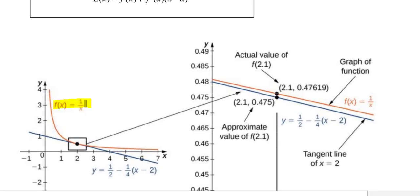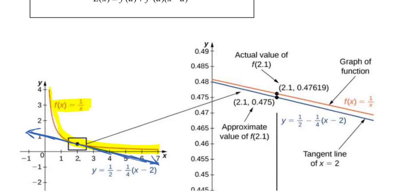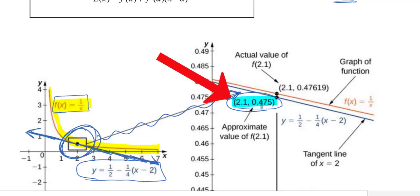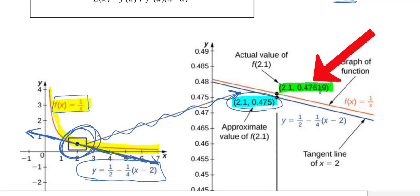If we look at the function f(x) = 1/x — that's the curve graphed here — and we write the equation of the tangent line at x = 2, then anything really close to x = 2 gives us a really good approximation for the actual function's value. To the right is a zoomed-in graph of that boxed area. If I want to approximate f(2.1), the approximate value is 0.475, and the actual value is 0.47619 — very, very close.